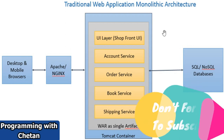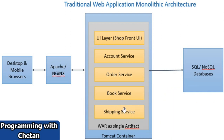If we take an example of an e-commerce website, we can have different functionalities: an account service, an order service, booking an order, and shipping the order. All these functionalities are combined together into a single unit and need to be deployed together. We can create a WAR file and deploy it on a Tomcat container, a Windows or Linux server, or on Oracle WebLogic.